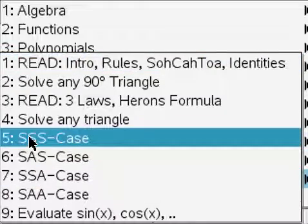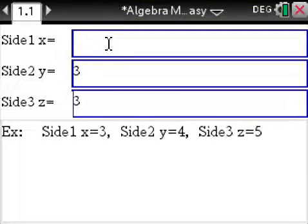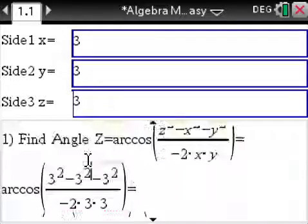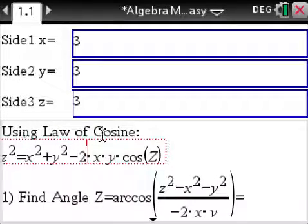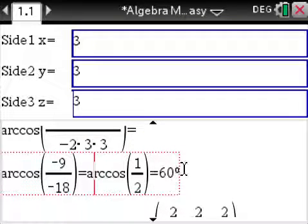So if we go to do trig, SSS case, change this to a three, we go up some, using the law of cosine, formula for law of cosine, find angle Z, we go down a little bit. Here we go.